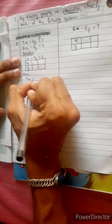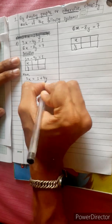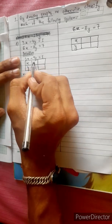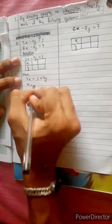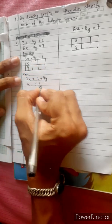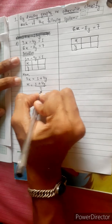For the first equation, 3x equals 1 plus 4y. So x equals 1 plus 4y divided by 3.